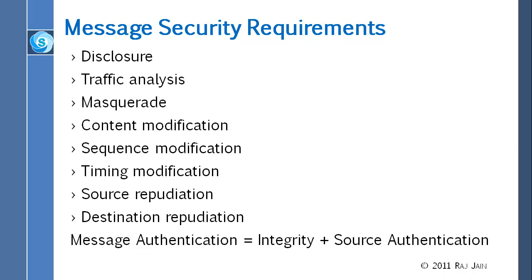Putting the source address alone does not help, because basically we need something that only the source knows. If you just put the source address and protect it, that is not valid proof — somebody could say anybody can put that source address. So the message having that source address is proven, but that doesn't mean the claimed sender actually sent it. We have to make sure that in addition to the source being protected, we can actually prove the source sent it.